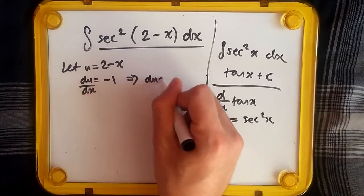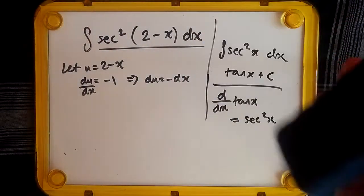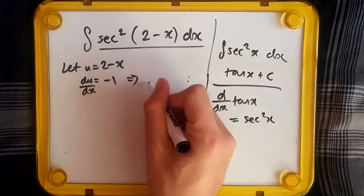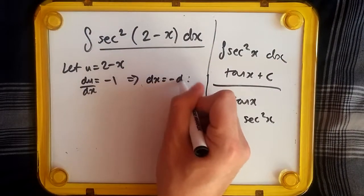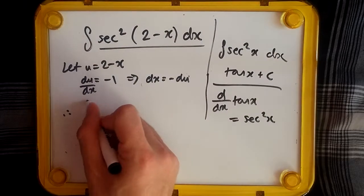Now multiplying both sides by dx, we get du equals minus dx, or to make it even better, dx equals minus du, since we want to replace dx. And literally that's it. Now popping everything back in, what do we have?